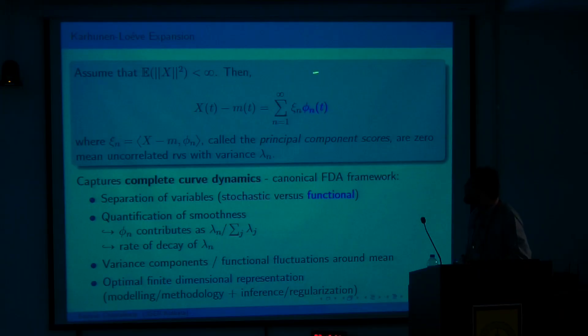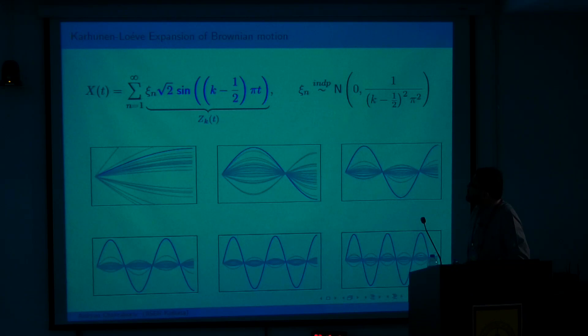This expansion is extremely useful when developing statistical analysis for functional data, because we can understand how these random functions behave, their degree of smoothness, and how much they fluctuate around the mean. It is very fundamental to functional data analysis and is heavily used in modeling, methodology, inference, and regularization.